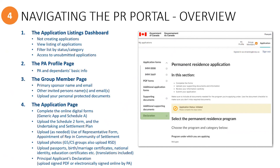The principal applicant will either be invited to electronically sign their declaration online, or sponsors will need to upload a PDF version of this form with the principal applicant's signature. You will learn about these two different options for providing the principal applicant's signed declaration in an upcoming segment.